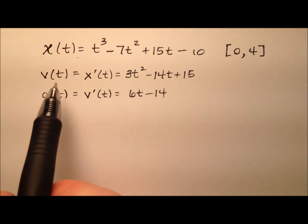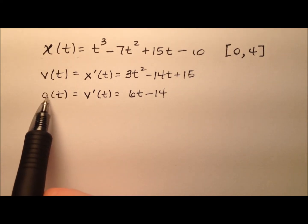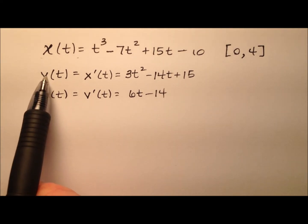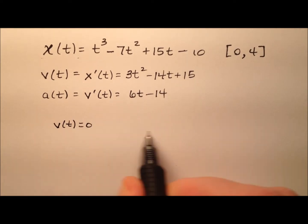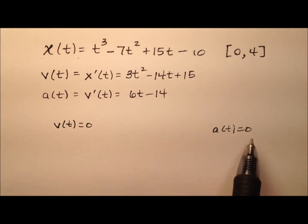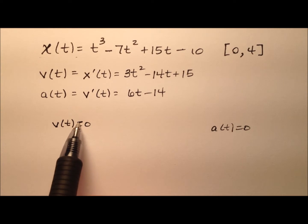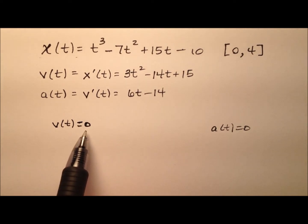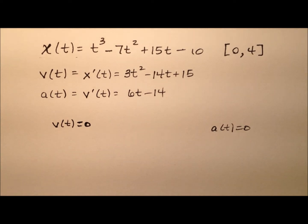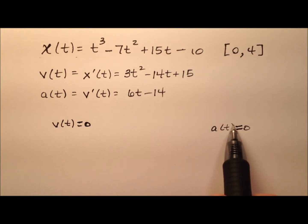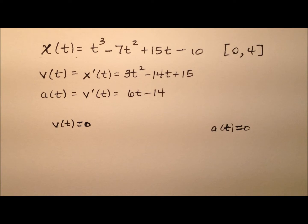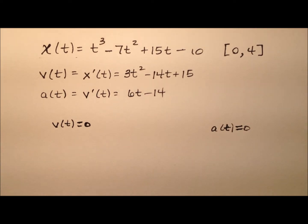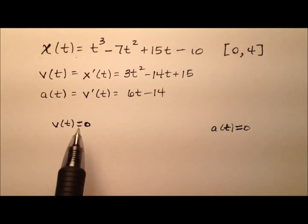The next thing we need to do is determine critical points from the velocity and acceleration functions. We set v of t equal to 0 and a of t equal to 0, because that tells us at what points velocity and acceleration are zero. These are important because if velocity is zero, the particle is either moving right or left on either side. And if velocity or acceleration is going to change from positive to negative, it has to pass through zero — that's why we care about these zeros.